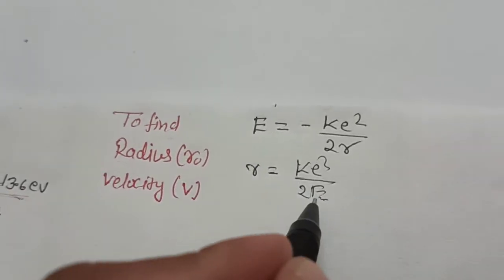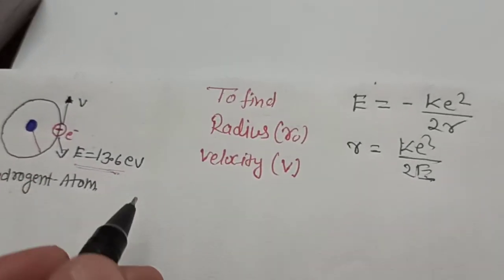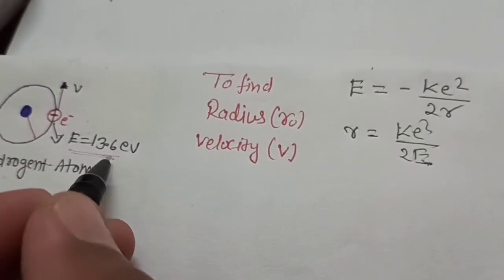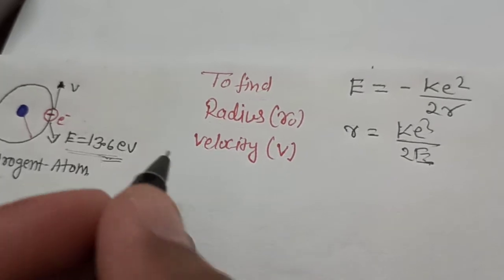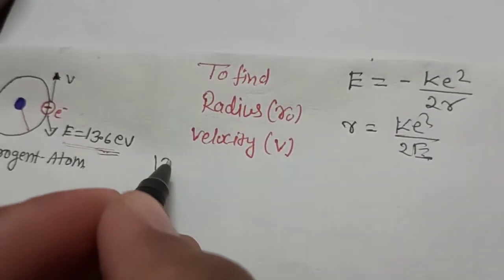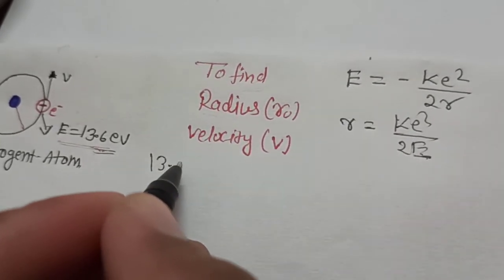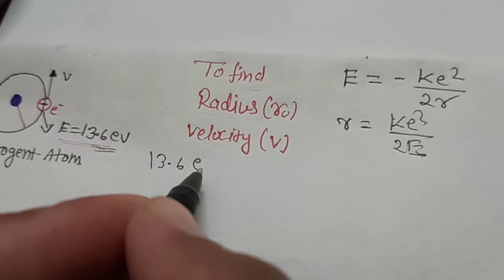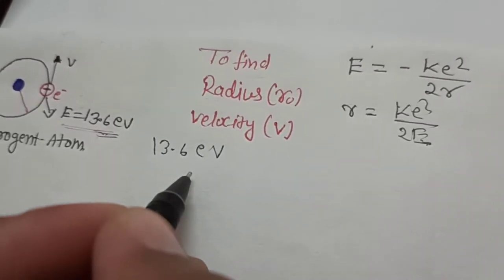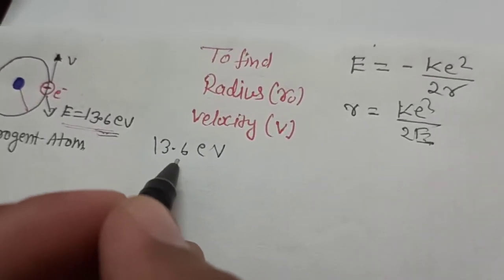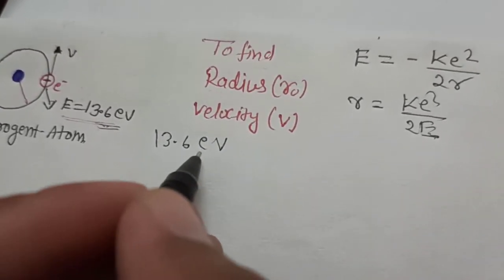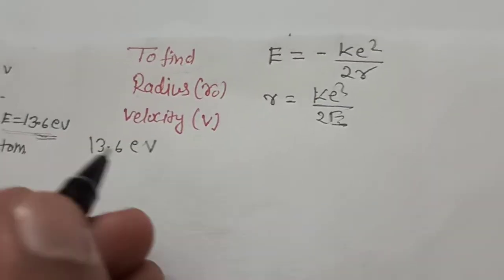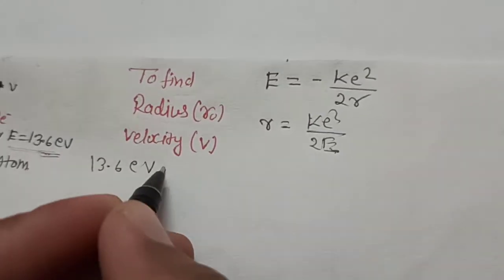First we need to find the value of E. We must convert 13.6 electron volts into Joules. We multiply by 1.6×10⁻¹⁹ to convert from electron volts to Joules.